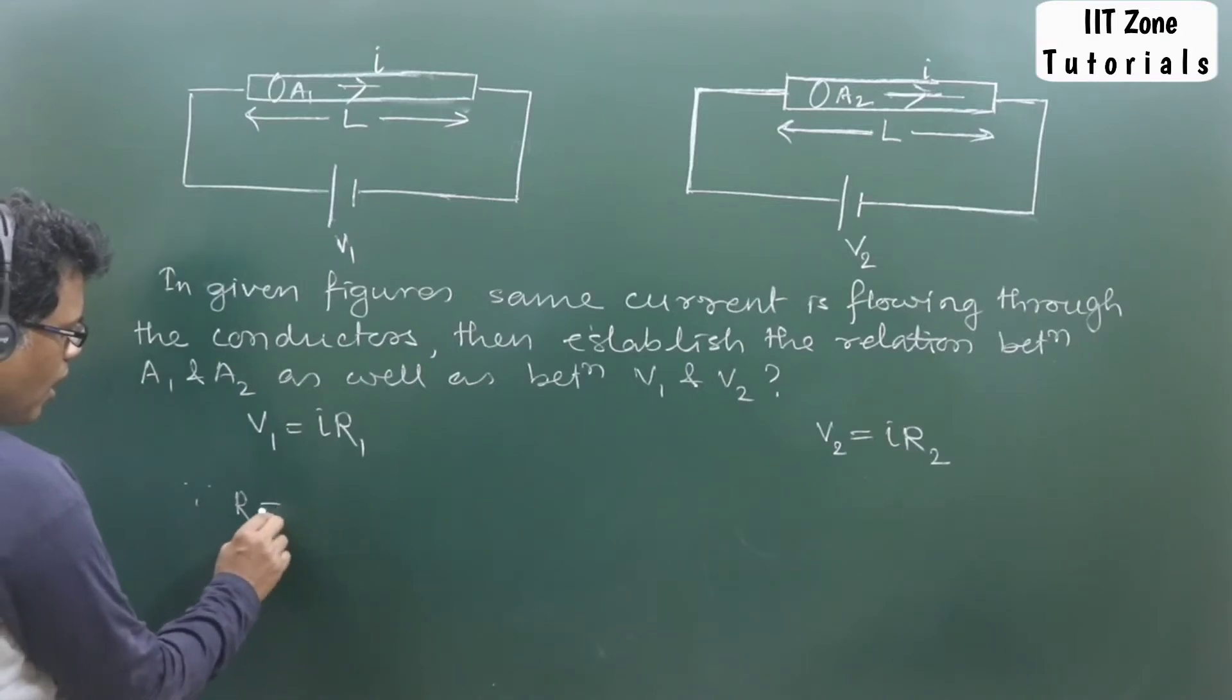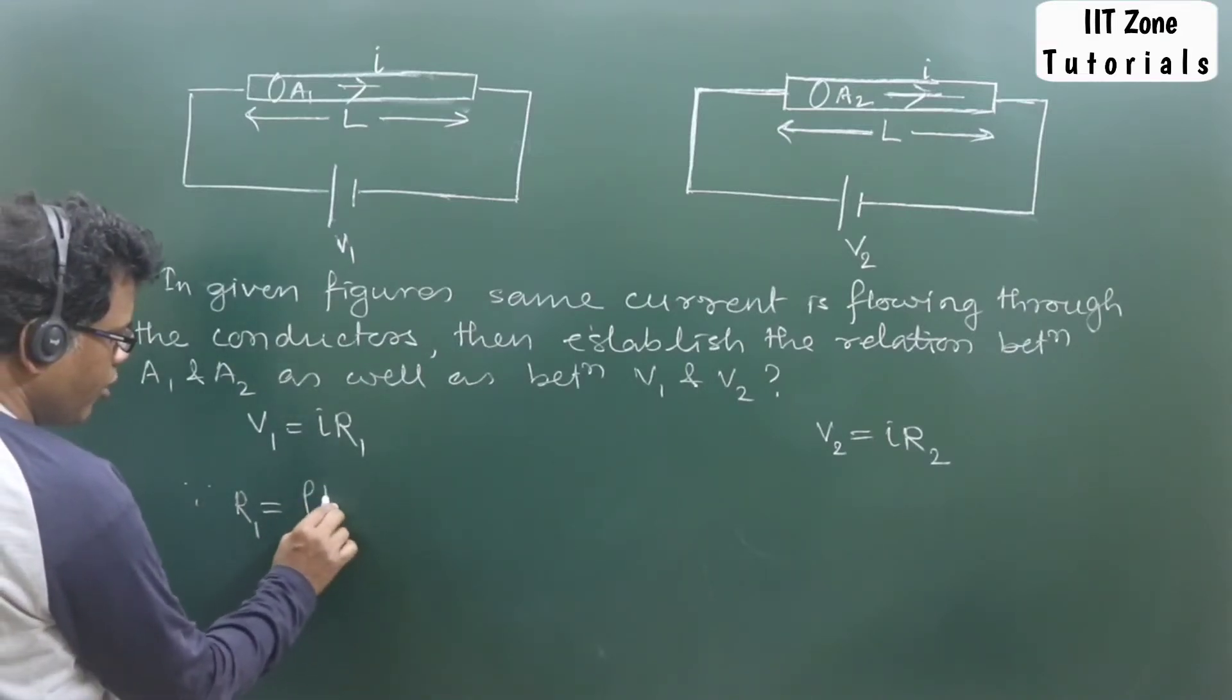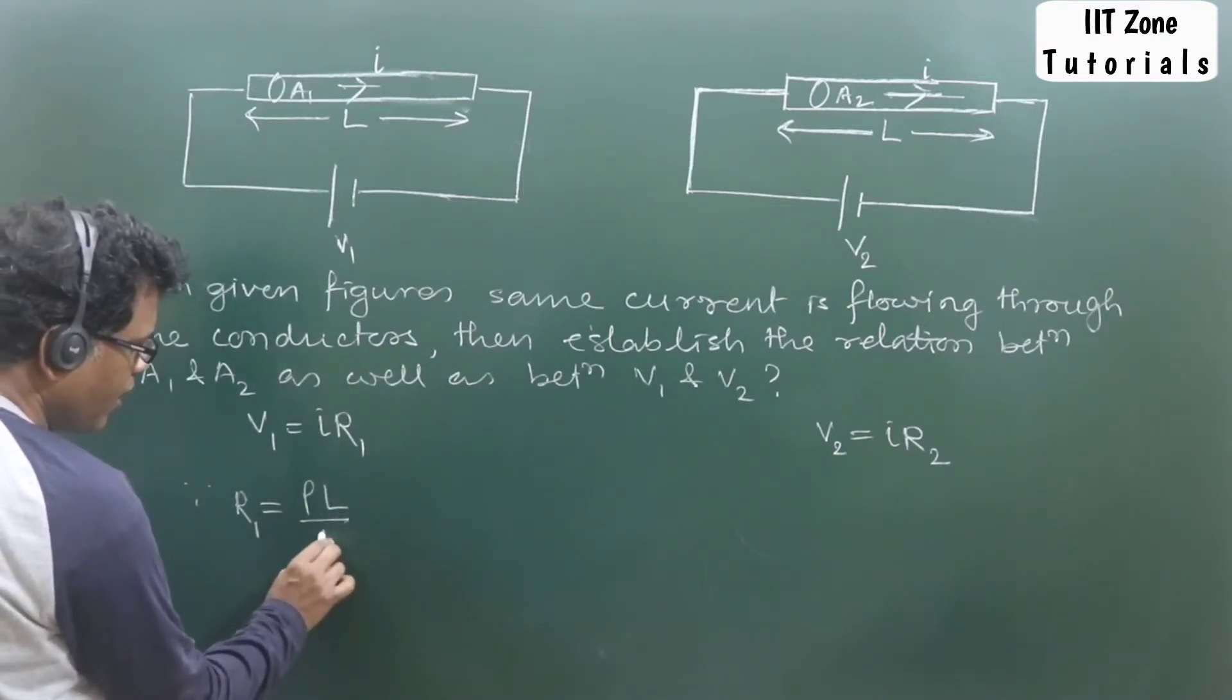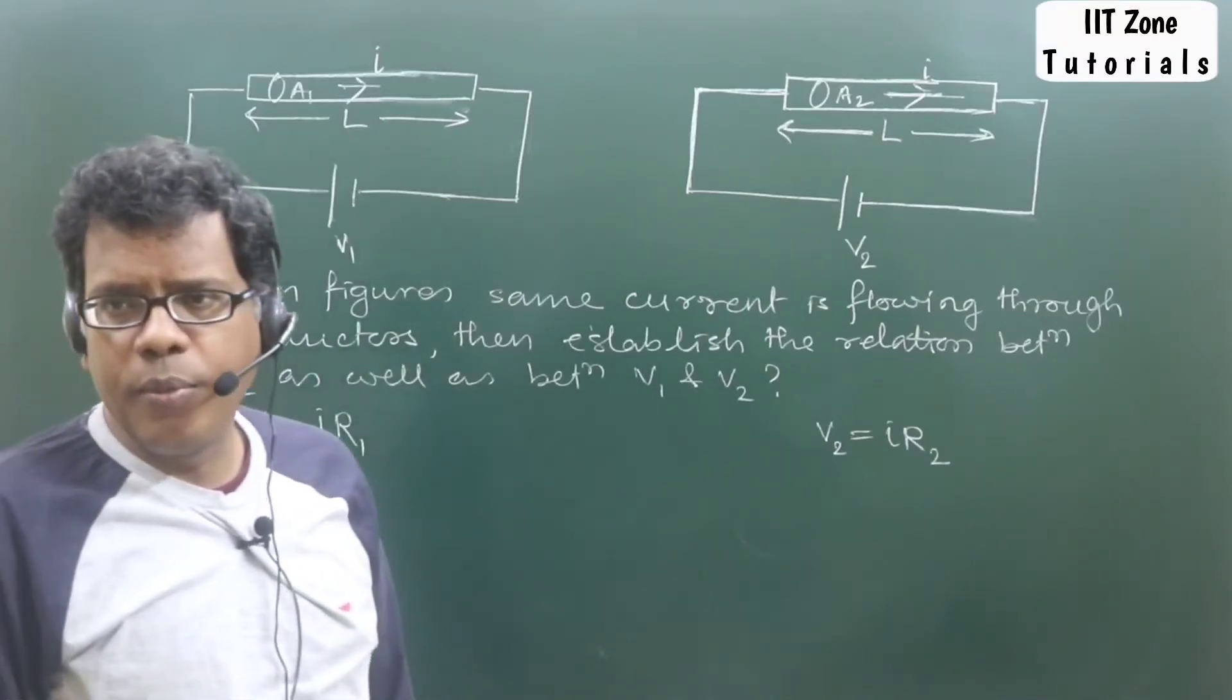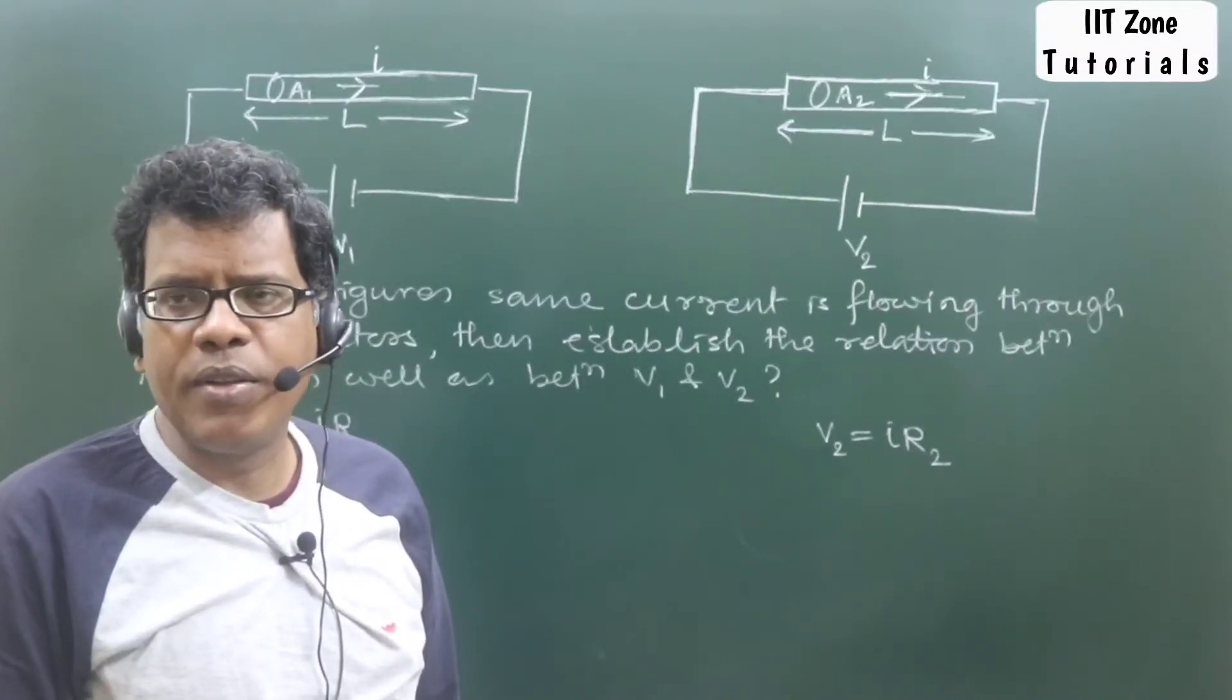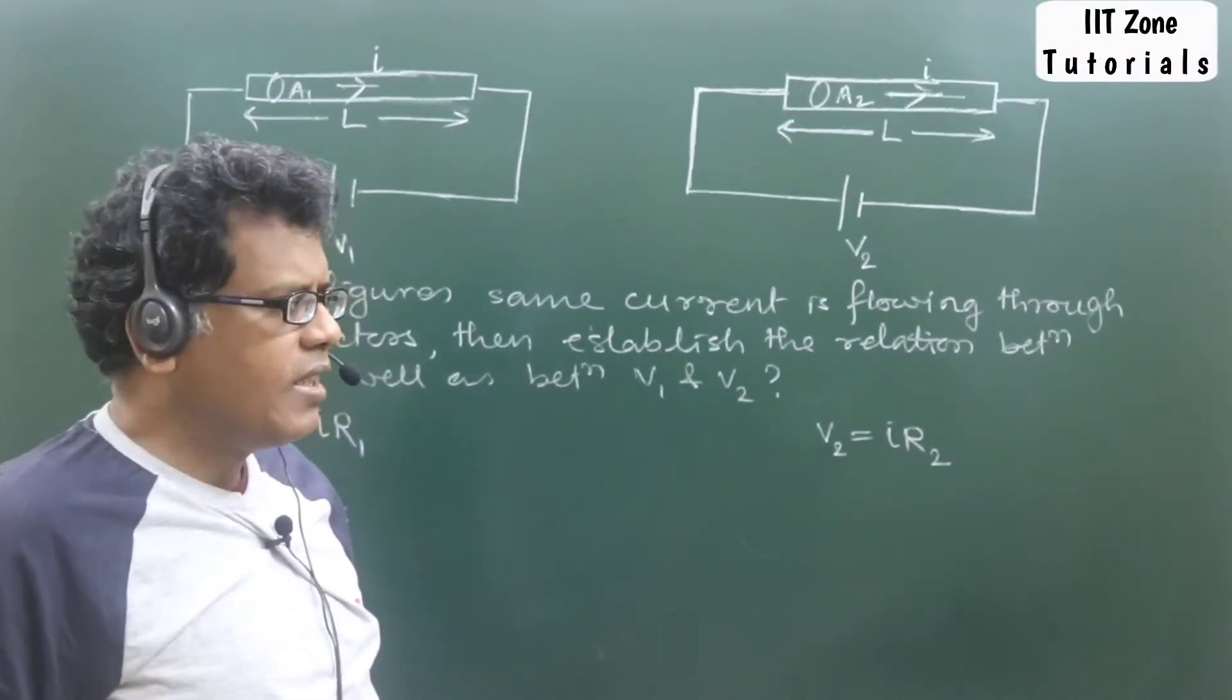Then what we can write individually—since we know that R1 is equal to ρ into length by area of cross-section. Do you remember this formula or not? We discussed it in our previous class.